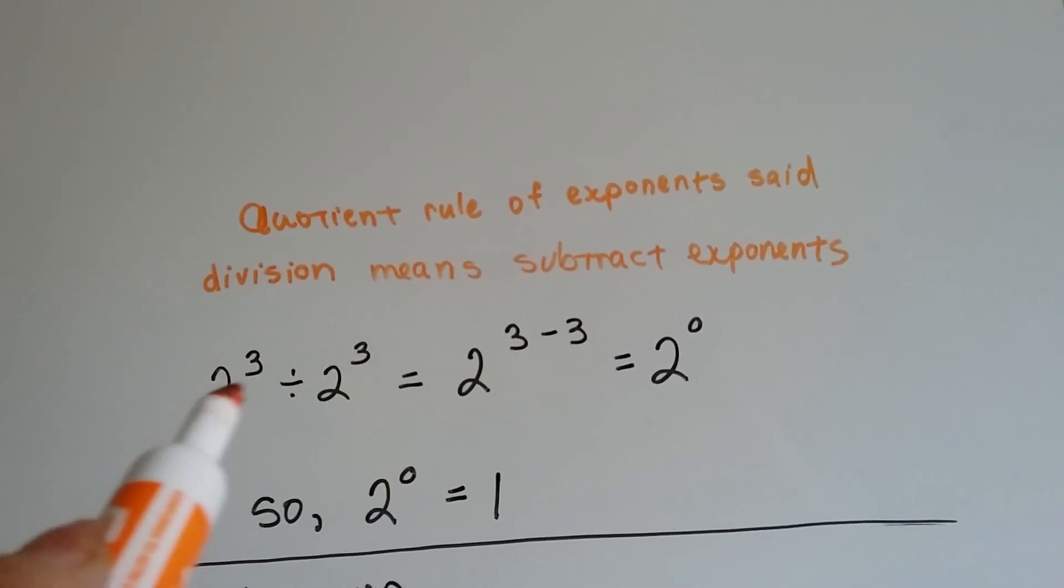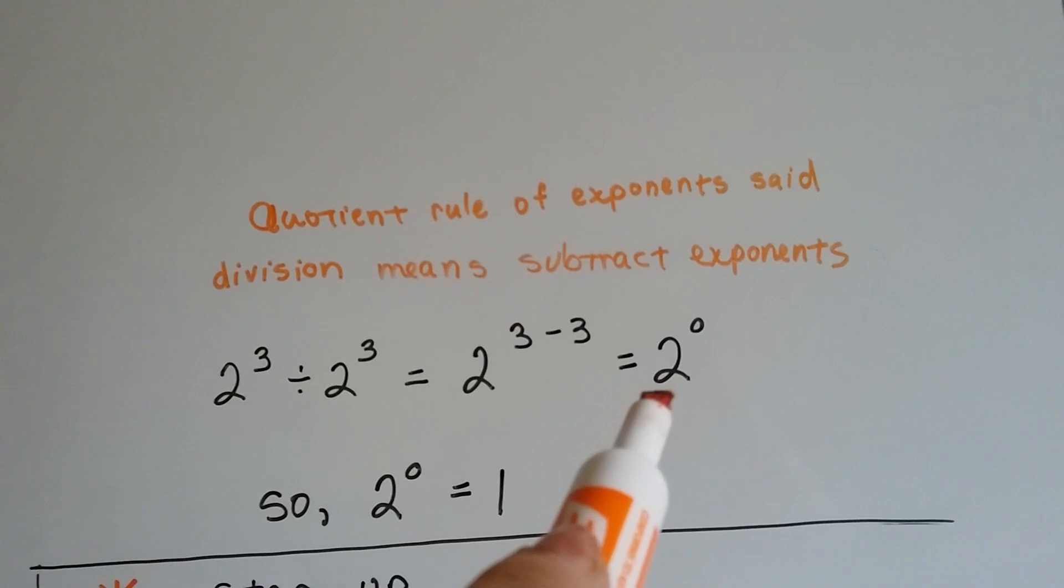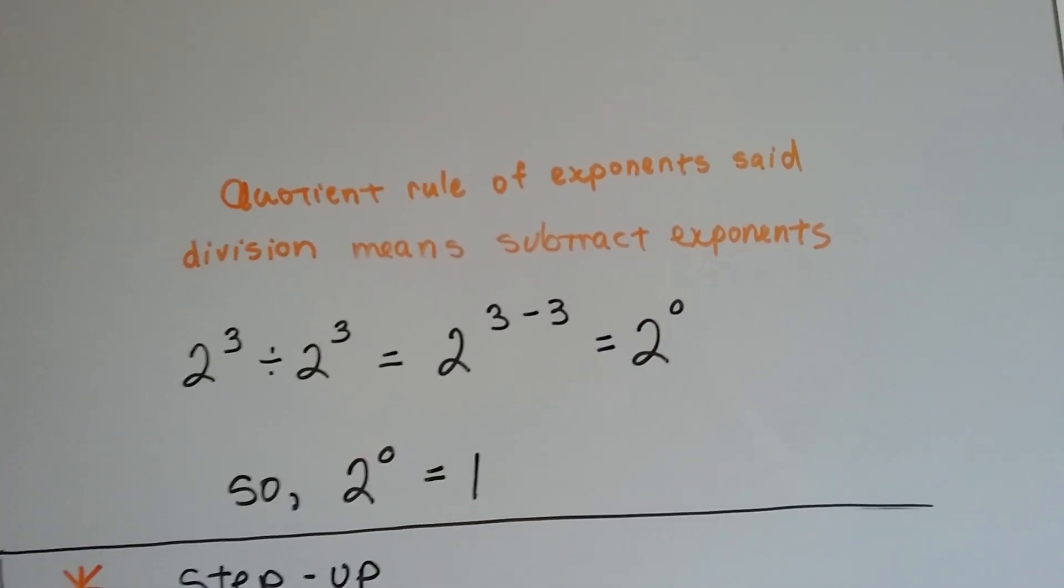Well, since we're dividing it by itself, it's going to equal 1, and 2 to the zero is going to equal 1.